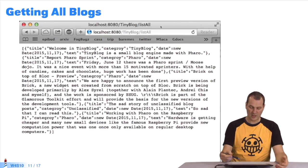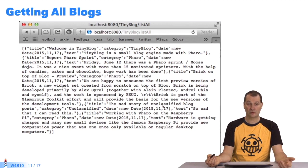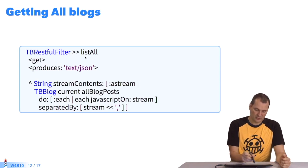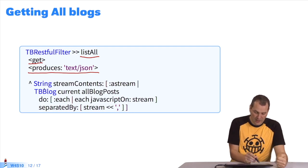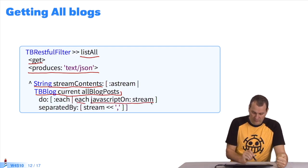Now, let's imagine that I want to get all the blogs that I have on my TinyBlog server. Here's how. First, I define a method in the RESTful filter class, a method called ListAll. It corresponds to the anchor I'm going to use. I tell it to use its GET from the REST protocol to generate text in JSON form. I create a Pharo string stream. I want the stream to contain all available blogs. I'll take each blog, and you see another iterator. Take each blog and convert it to JavaScript, separated by commas. That gives me what I want.